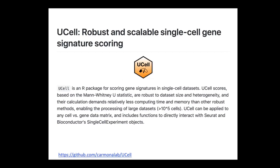Just as there are hundreds of methods for clustering and dimensionality reduction, there are also several methods for scoring gene lists. One alternative to Seurat's AddModuleScore is UCell, which also does signature scoring. An advantage of UCell is that you can specify which marker genes should be absent — if you know a cell type expresses one gene but absolutely does not express another, you can include that negative gene in your signature. Seurat's module score cannot do negative scoring, so UCell can be more precise.